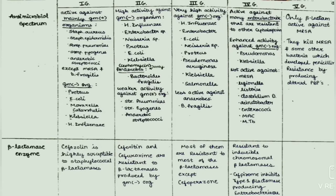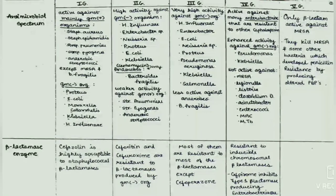The third generation cephalosporins have high activity against gram-negative organisms like H. influenzae, Enterobacter, E. coli, Neisseria species, Proteus, Pseudomonas aeruginosa, Klebsiella, and Salmonella. They have less activity against anaerobes like Bacteroides fragilis.